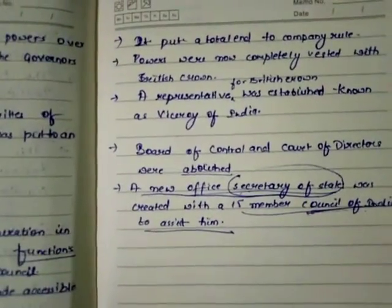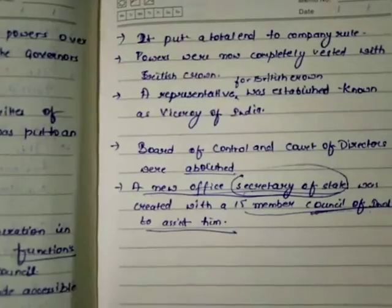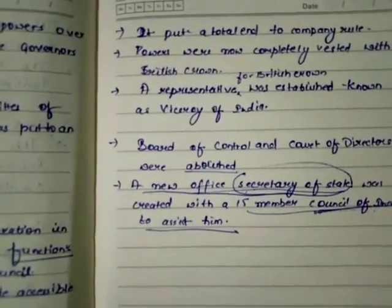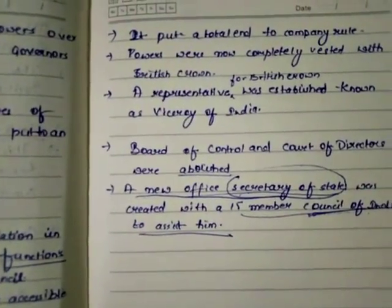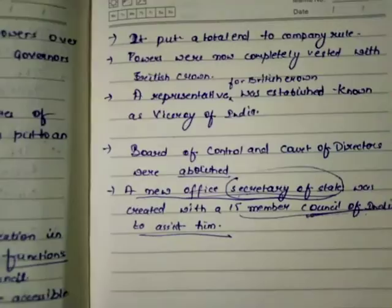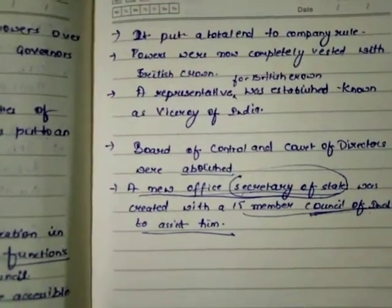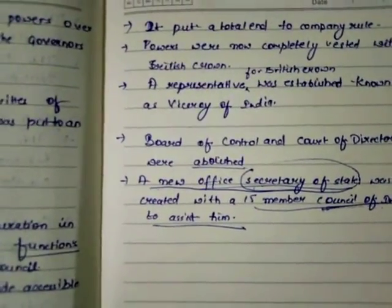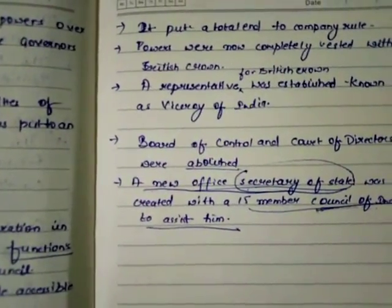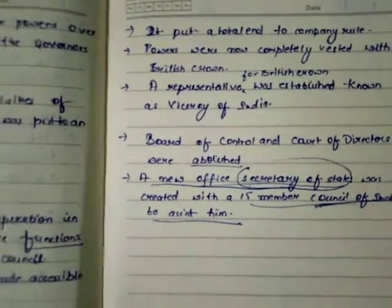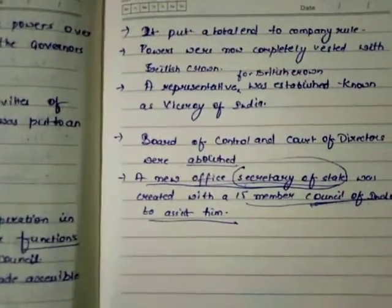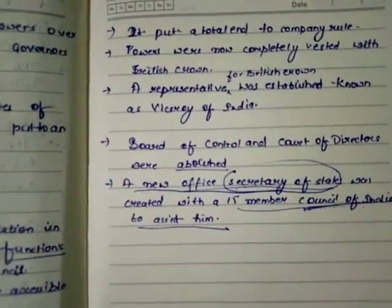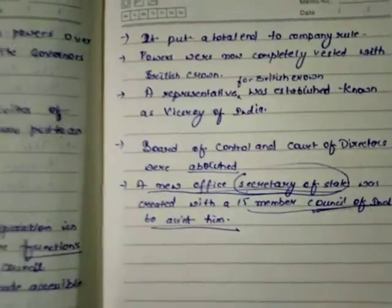Also, the Board of Control and the Court of Directors that were established during the Pitt's India Act of 1784 were abolished, and a new office of Secretary of State was created with a 15-member Council of India to assist him.